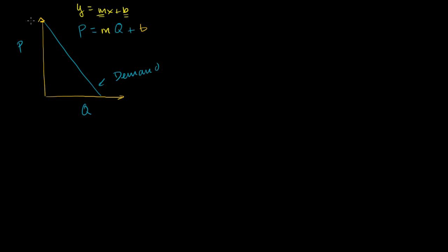So this right over here is b. And if you were to take your change in p and divide it by your change in q, you would get m. That is your slope. Change in p divided by change in q.